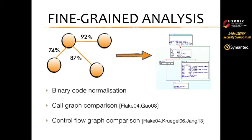The next step is the fine-grained binary analysis. Let's imagine a cluster depicted on the left of the slide, composed of four nodes — each node represents a sample, and each edge represents similarity. First, we normalize the assembly code of each sample, normalizing the operands. Then we extract the submission timeline and compare samples using binary diffing techniques, starting by inspecting the call graph. If we find a mismatch, we zoom in and look at the control flow graph at the basic block level.